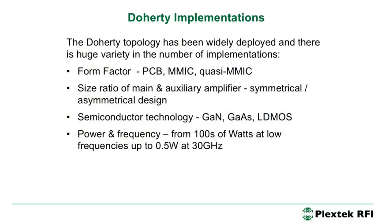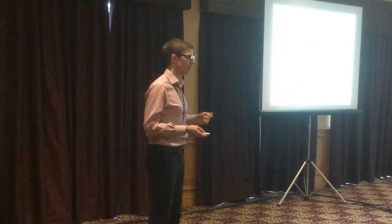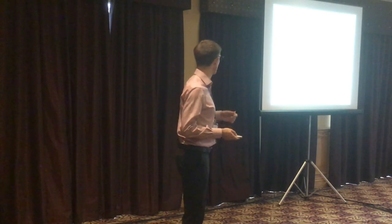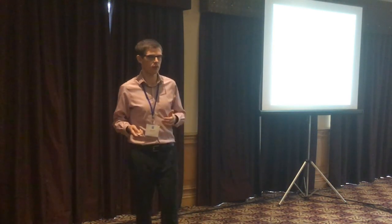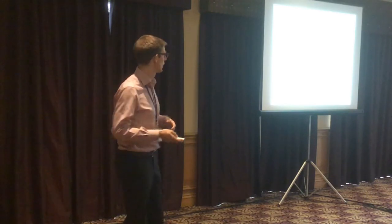The Doherty amplifier has been implemented in a number of different form factors: PCB with discrete devices, MMICs, and quasi-MMICs. There's a choice of size ratio between the main and auxiliary amplifier, which sets where the back-off efficiency peak occurs. It's been implemented in gallium arsenide, gallium nitride, and LDMOS — originally a vacuum tube technique from the 1930s. It's been implemented at a range of powers and frequencies, from hundreds of watts at 900 MHz or 2 GHz, up to half a watt at 30 GHz. It's a very versatile configuration.